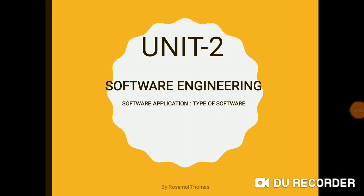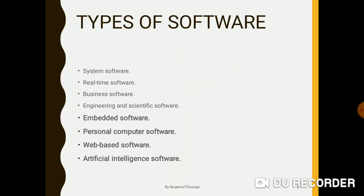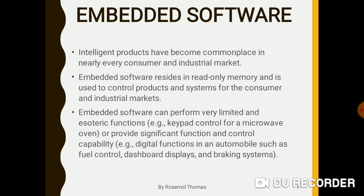Hello everyone, myself Rosamund Thomas. Today we are going to discuss Unit 2: Software Engineering — the types of software. The list of types includes system software, real-time software, business software, engineering/scientific software, embedded software, personal computer software, web-based software, and artificial intelligence software. We have already discussed the first four in the previous video. In this video, we will be discussing embedded software, personal computer software, web-based software, and artificial intelligence software.